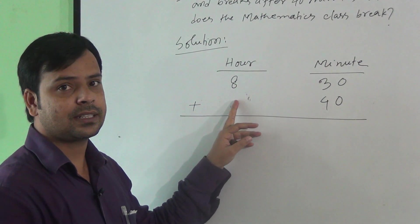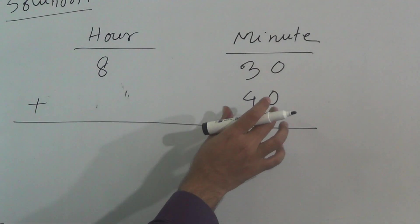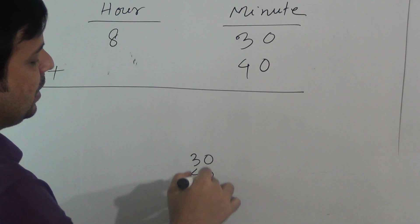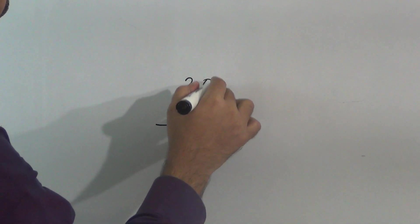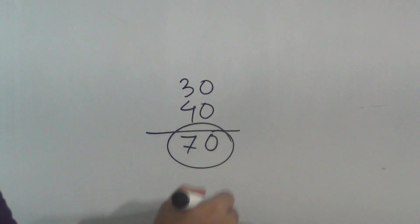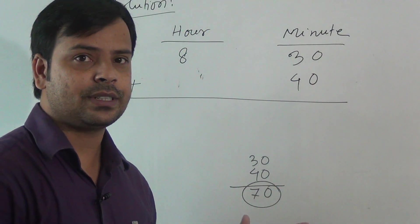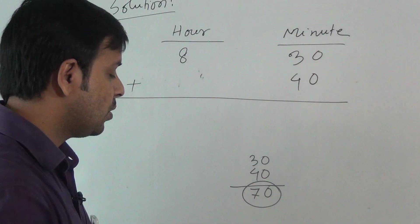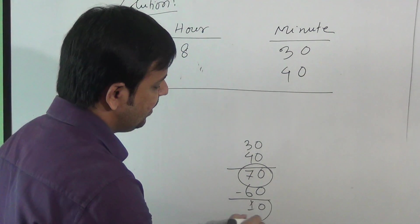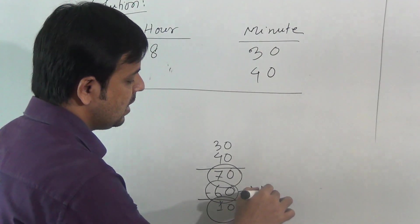Now do the addition — add 30 and 40. You will get 70 minutes. But you know, 60 minutes is equal to 1 hour. So if we subtract 60 from 70, we will get 10 minutes. For those 60 minutes, we get 1 hour.